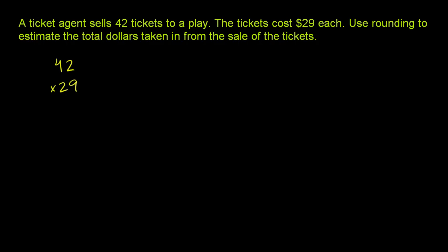So if we want to round, we really just have two places here, so we're going to round to the nearest 10, because that's the largest place we have. If we round 42 to the nearest 10 — we've done this drill many times — the 2 in the ones place is less than 5, so we're going to round down. The nearest 10 is 40.